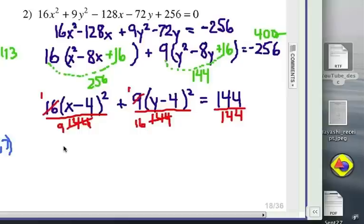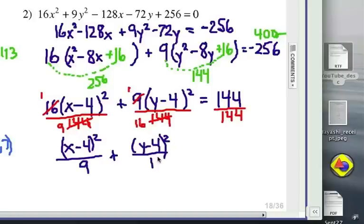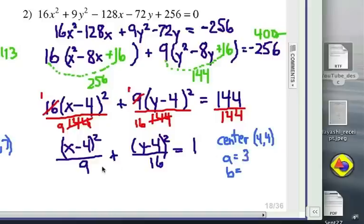That gives us our final equation form of (x minus 4) squared over 9 plus (y minus 4) squared over 16 equals 1. The center is going to be at (4,4). The a distance horizontally out from the center for this ellipse would be 3 because 9 is 3 squared. And b would have to be 4 because that's 4 squared gives you 16.